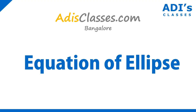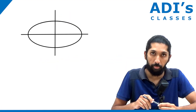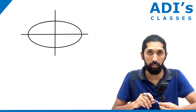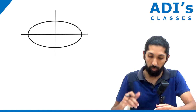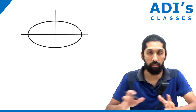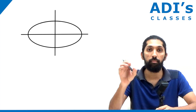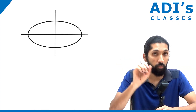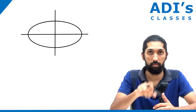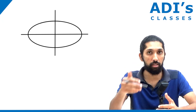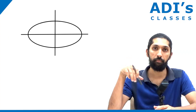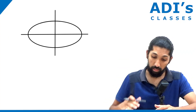Let's do the equation of an ellipse. Now before we do the equation of an ellipse, consider this particular ellipse. You have the semi-major axis a, semi-minor axis b — but is there a relation between the semi-major, semi-minor, and one more very important element, which is the focus? Do we have a relation between a, b, and c? That's a very important part in an ellipse.